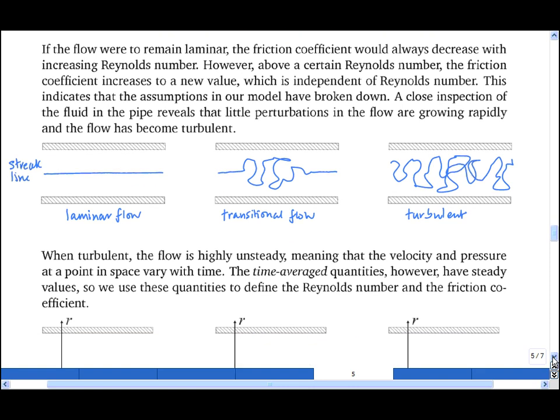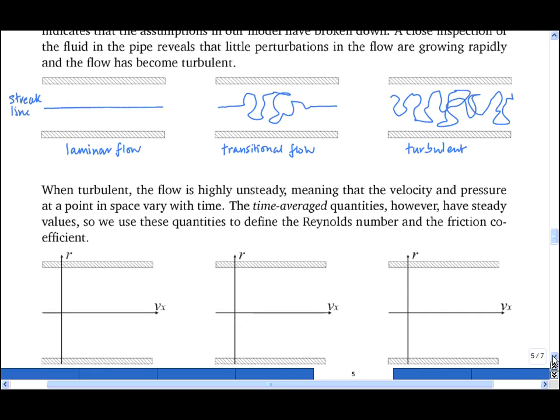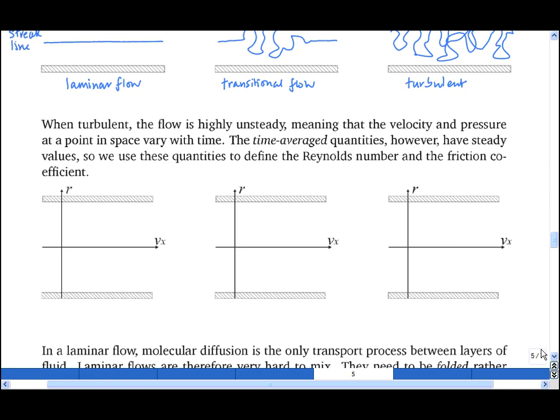When a flow is turbulent, it is unsteady, meaning that the velocity and pressure fields change with time. So if I were to measure the velocity field instantaneously and plot it, the velocity would be zero at the walls through the no-slip condition, and then looks something like this within the pipe.